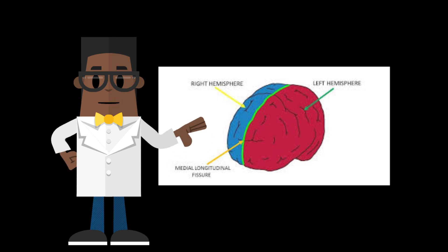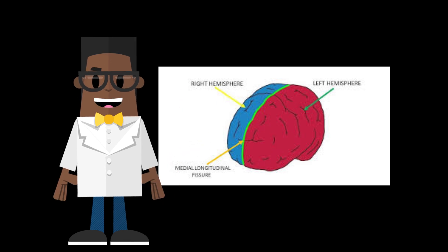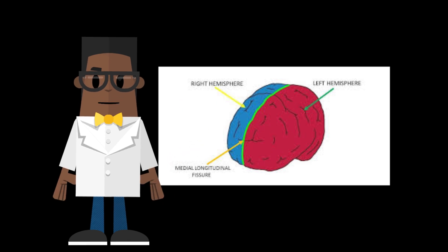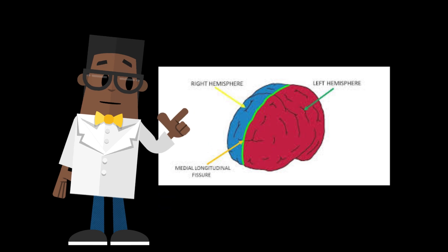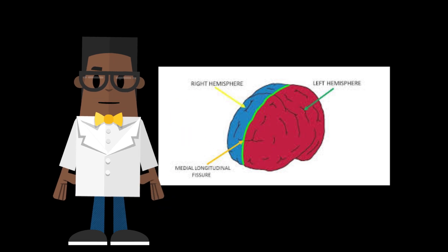To begin, let's break down some of the general gross anatomy of the brain. Our brain is split down the middle along a deep groove called the longitudinal fissure, forming the left and right hemispheres.